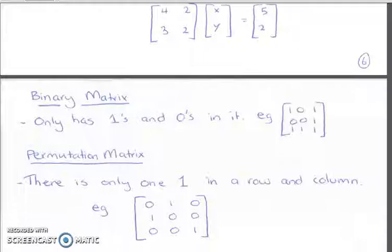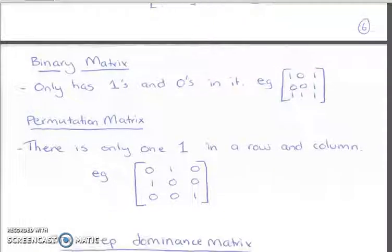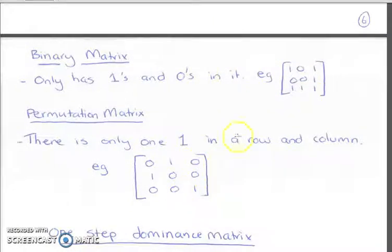Binary matrix and permutation matrix. Definitely knowing what these matrix means only has ones and zeros in it. And permutation matrix only has ones in only one row and a column. So there's no double ups of ones in columns and rows.